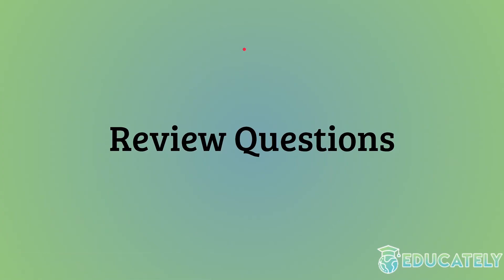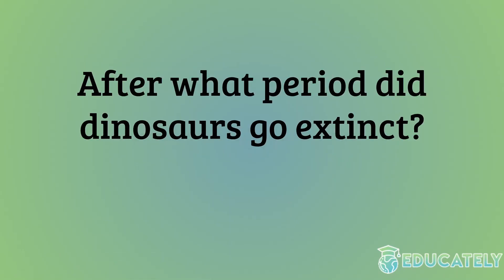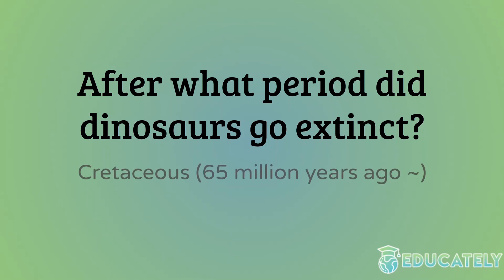We're going to go over some review questions covering things from this video. First question: after what period did dinosaurs go extinct? Remember, I said period, not era. You might be thinking Mesozoic era — that's an era, but we're talking about a specific period. It's the Cretaceous period, roughly 65 million years ago.